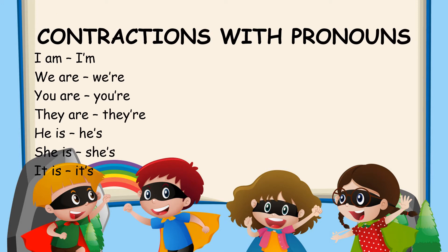I am — written as I apostrophe M. We are — We apostrophe RE. You are — You apostrophe RE. They are — They apostrophe RE. He is — He apostrophe S. She is — She apostrophe S. It is — It apostrophe S.